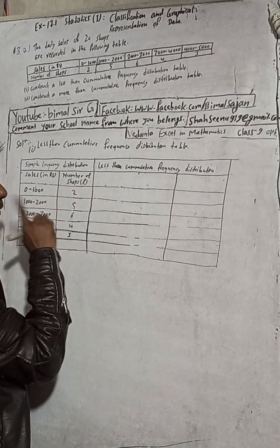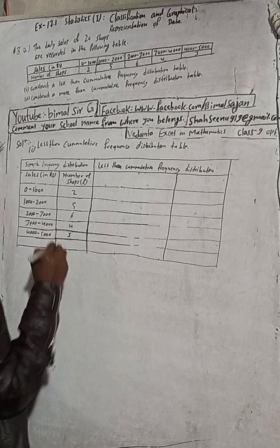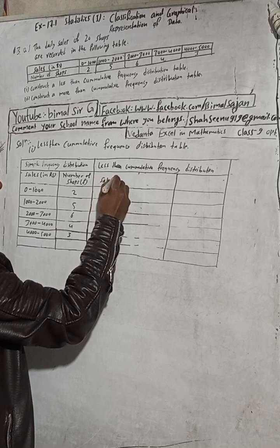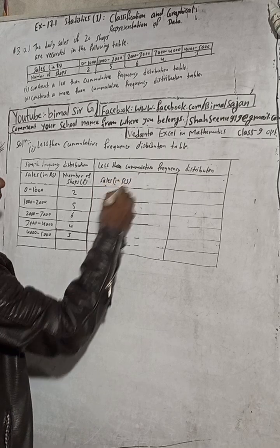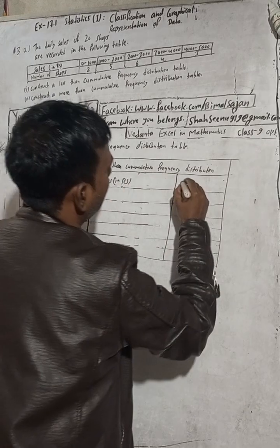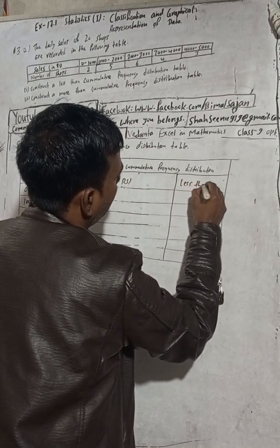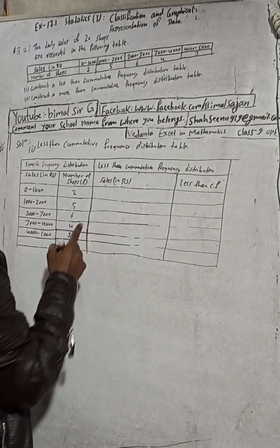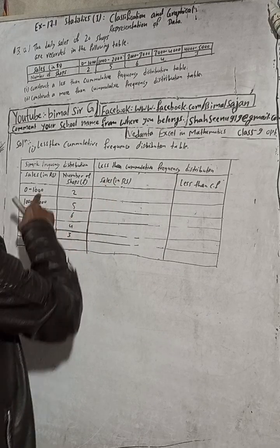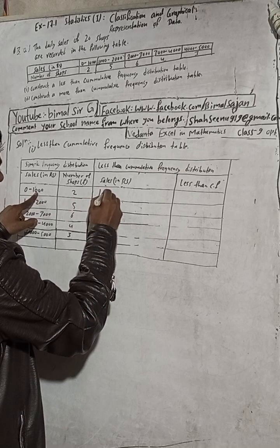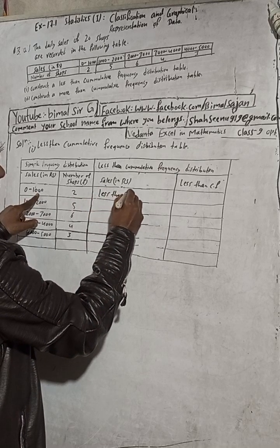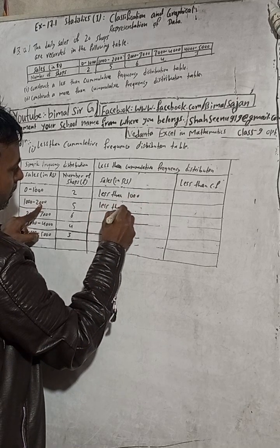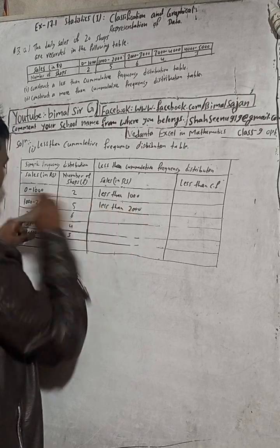Now for the less than cumulative frequency distribution table, I will write here: sales in rupees, and here I will write less than cumulative frequency. In this case I will write: less than 1000, less than 2000, and so on.